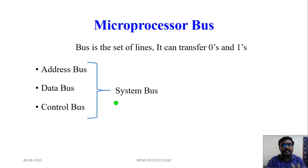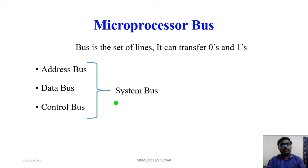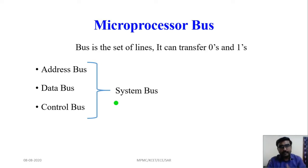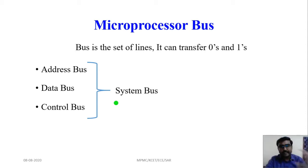The control bus carries several control signals. In this lecture, we will focus on the read and write control signals. When you want to read data from memory, the control bus sends a read control signal. When data is to be written to memory, the write control signal is enabled.